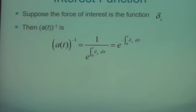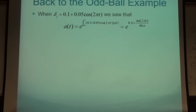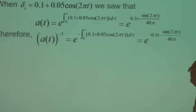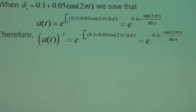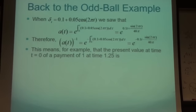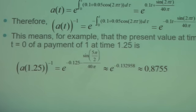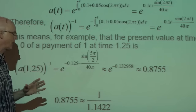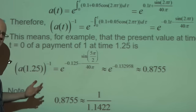Back to the oddball example where the force of interest is periodic: the present value function is exp(-0.1t - (1/40π)·sin(2πt)), the reciprocal of the accumulation function. The present value at time 0 of a payment of 1 at time 1.25 is approximately the reciprocal of 1.1422. Note: the effective 1.25-year rate was about 14.22%, and this present value is indeed approximately its reciprocal.